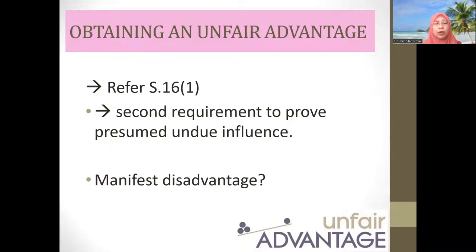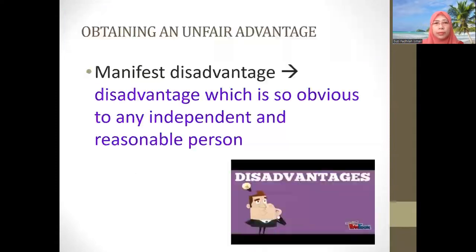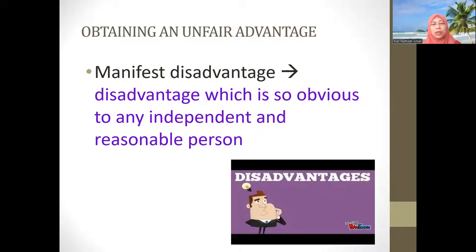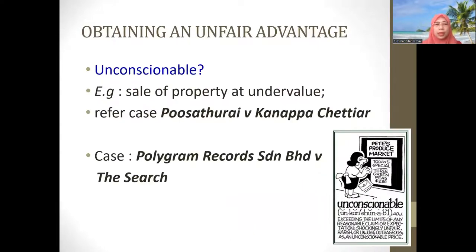Another related phrase used is 'manifest disadvantage' — a disadvantage which is so obvious. When we talk about manifest disadvantage, it denotes a disadvantage so obvious to any independent and reasonable person — people generally would say this is really to the disadvantage of the plaintiff or claimant. Another related word is 'unconscionable,' which you can see in Section 16 subsection 3.